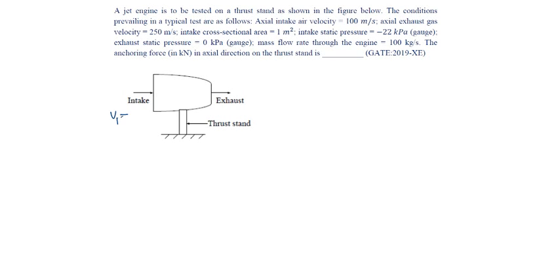Intake air velocity is given as 100 meters per second and exhaust velocity is given as 250 meters per second. Pressure at the exhaust is 0 and pressure at the inlet is minus 22 kilopascals, and area is 1 meter square.